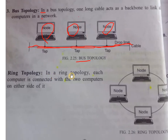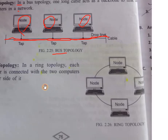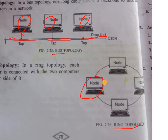In Ring Topology, each computer is connected with the two computers on either side of it. You can see the figure for ring topology here for better understanding — node 1, for example, is connected to the next node, and that node is also connected with the other nodes, forming a ring shape.